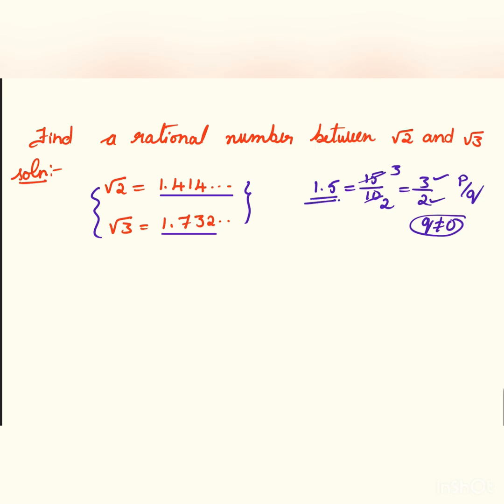So this is our answer, 1.5. Or else we can take even 1.6, which can be written as 16 by 10, and it will be equal to 8 by 5. So 8 by 5 is also in the form of p by q where q is not equal to 0.